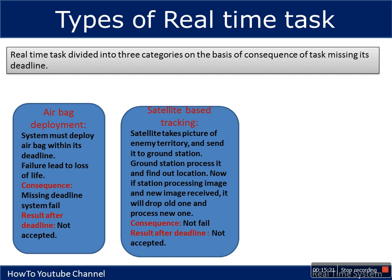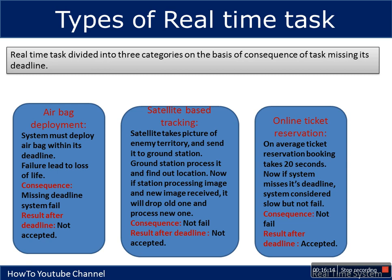For satellite-based tracking, the satellite takes pictures of enemy territory and sends them to a ground station. If the ground station is busy processing received images and new images arrive from the satellite that it misses, the system is not considered failed. However, the late results are discarded — the ground station will discard old images and accept the new ones. So the system is not failed, but results after the deadline are not accepted.